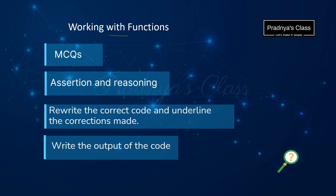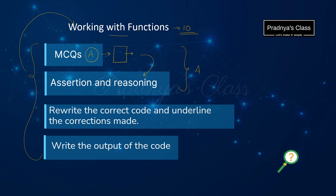Let's check out the next topic that is Working with Functions. This topic is also with higher weightage with almost 10 marks. In section A, you will be getting a question for one mark, in which the code will be given and you need to fill the missing line. Along with that, there can be a question in the form of assertion and reasoning. In section B, the code will be given with some errors and you need to rewrite the code and correct the errors. This will generally be for two marks. You may also get a question for two marks in which you need to find out the output of the code. The same type of questions you will be getting in section C for three marks, and whenever we need to find out the output of the code, we will be drawing the dry run table.